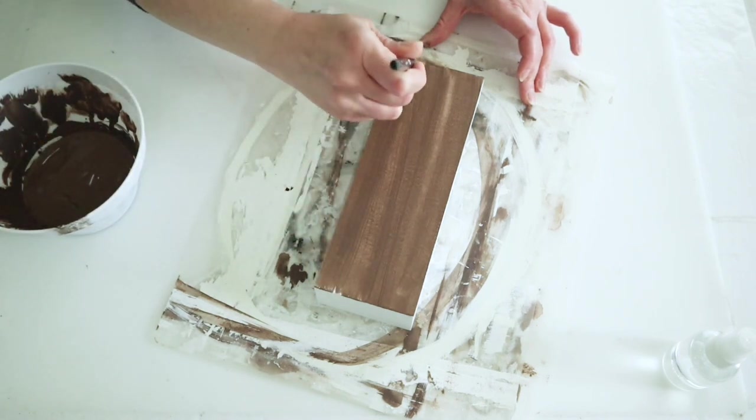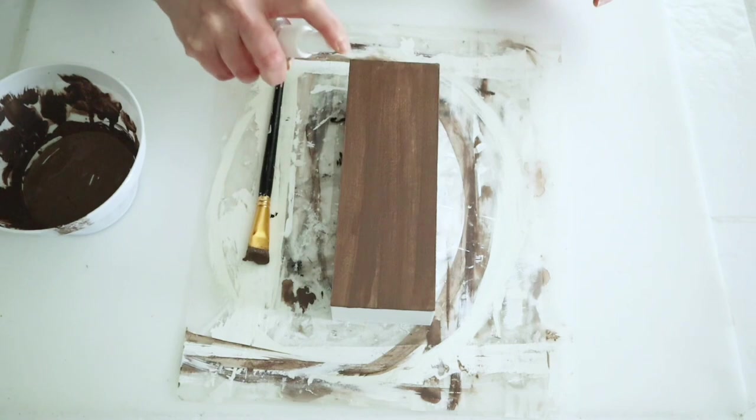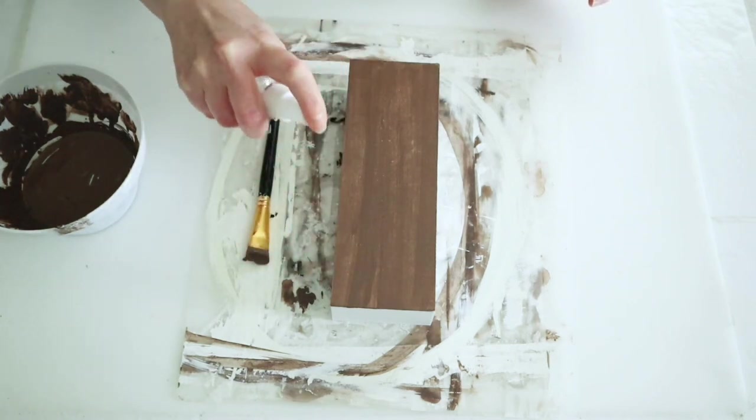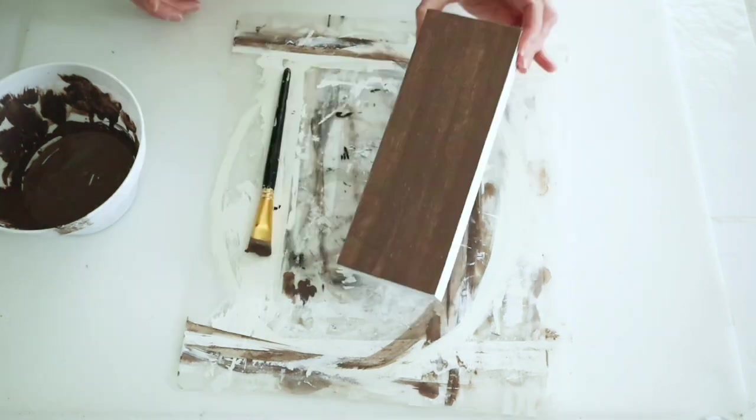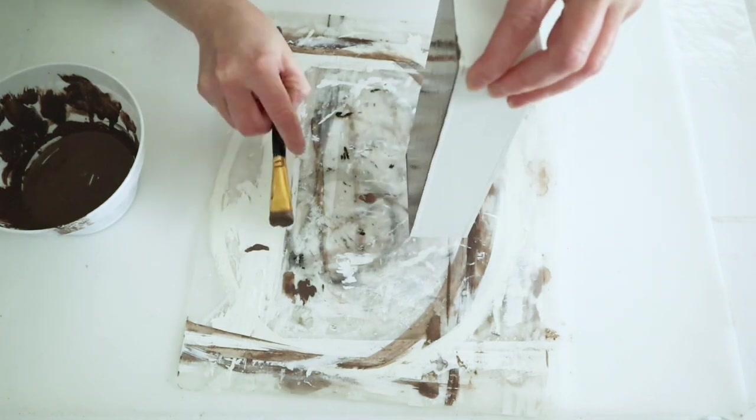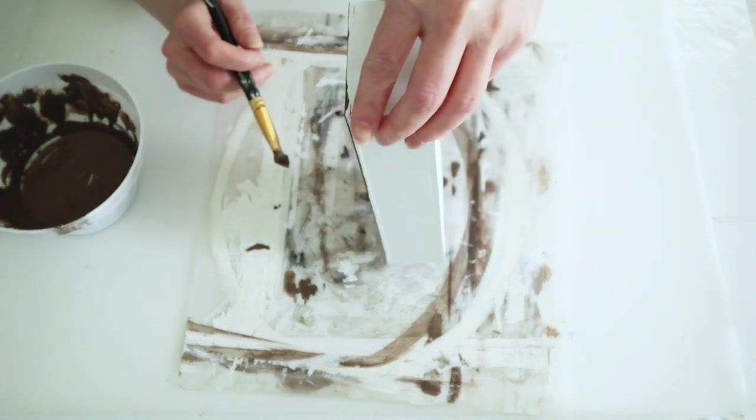I'm spraying this with water. Once it's fully sprayed down and nice and wet, I'm tipping it up, letting the excess run off, and then I'm taking that brush and brushing in long strokes to remove some of that paint.